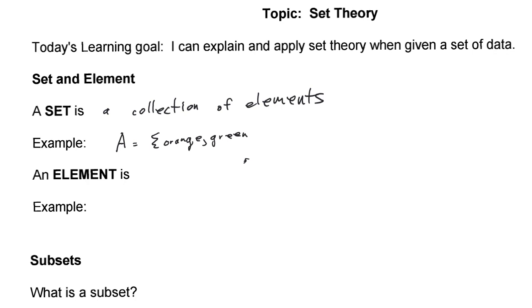I could also have another set that consists of all the days of the week. An element is something in a set. So in my set A, we have the following elements: orange, green, and red are all elements.